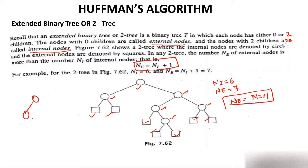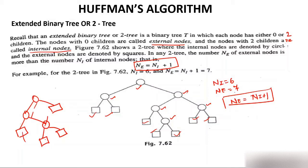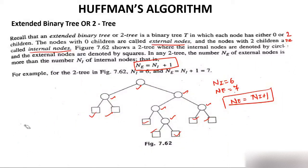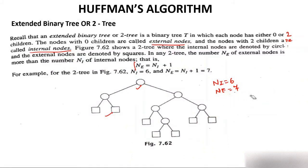Suppose you have a tree that is not yet an extended binary tree — meaning some nodes have only one child. You extend it by adding external nodes wherever a node has only one child, until every node has either two children or none. That is why it is called 'extended.' Counting gives 3 internal nodes and 4 external nodes, confirming the formula: internal nodes + 1 = external nodes.